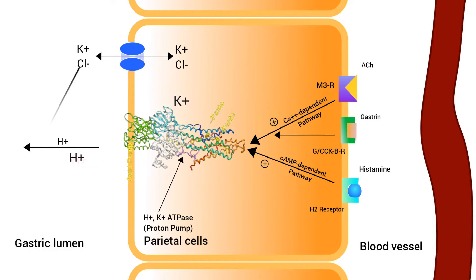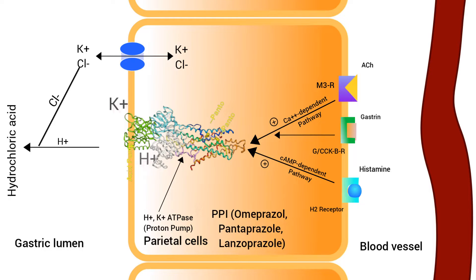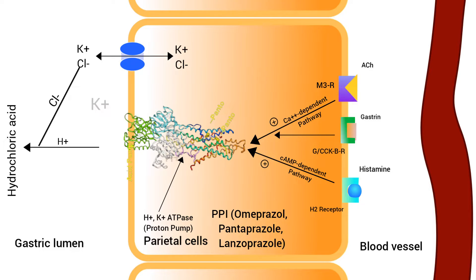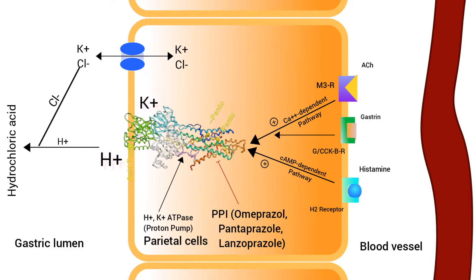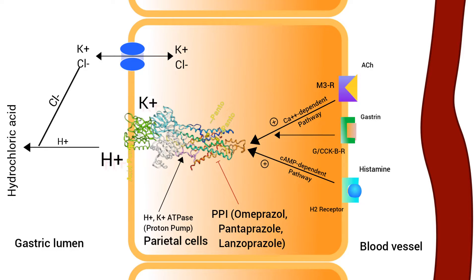Now, here's where PPIs come into play. These medications are designed to intervene in this process. PPIs are a group of potent inhibitors that specifically target and block the hydrogen-potassium adenosine triphosphatase enzyme system. By doing so, they effectively halt the production of gastric acid at its source.